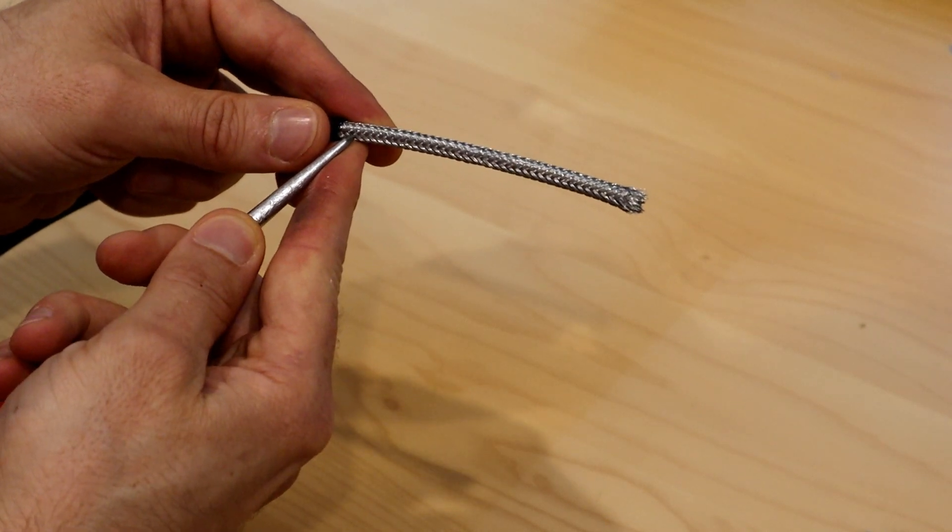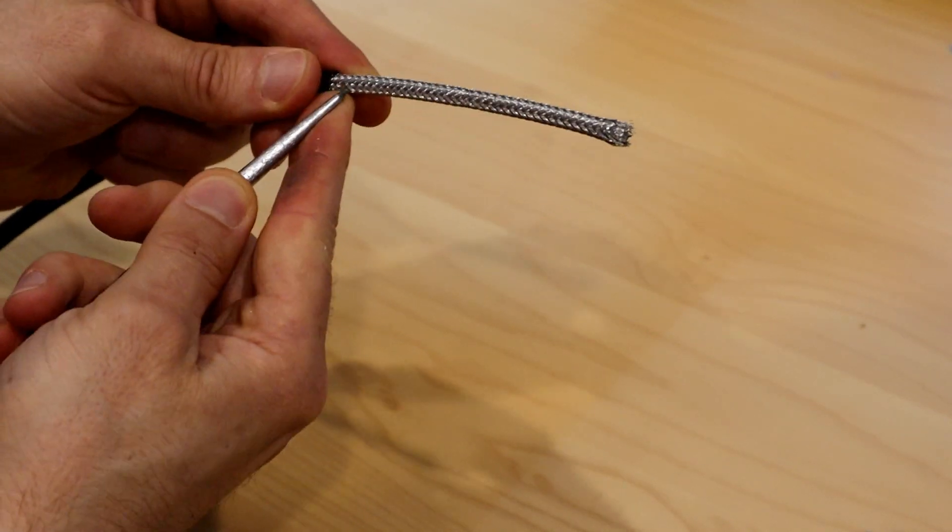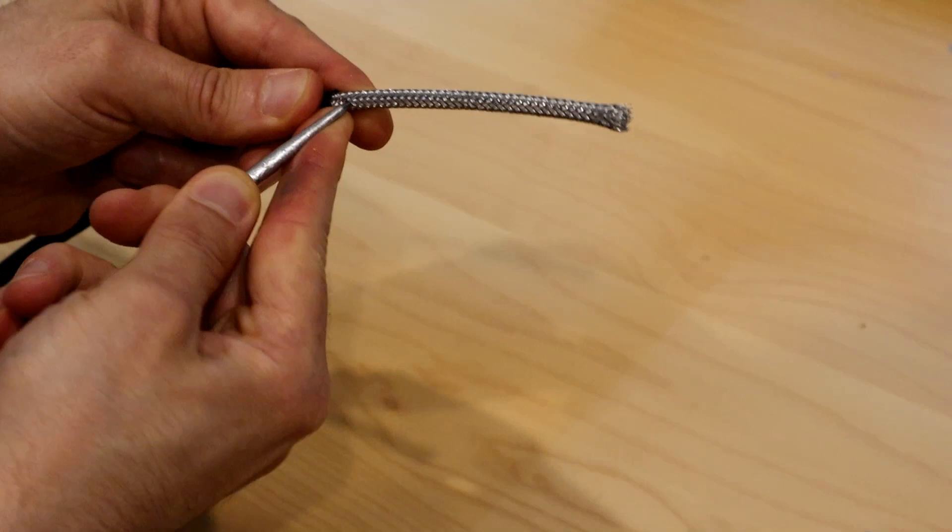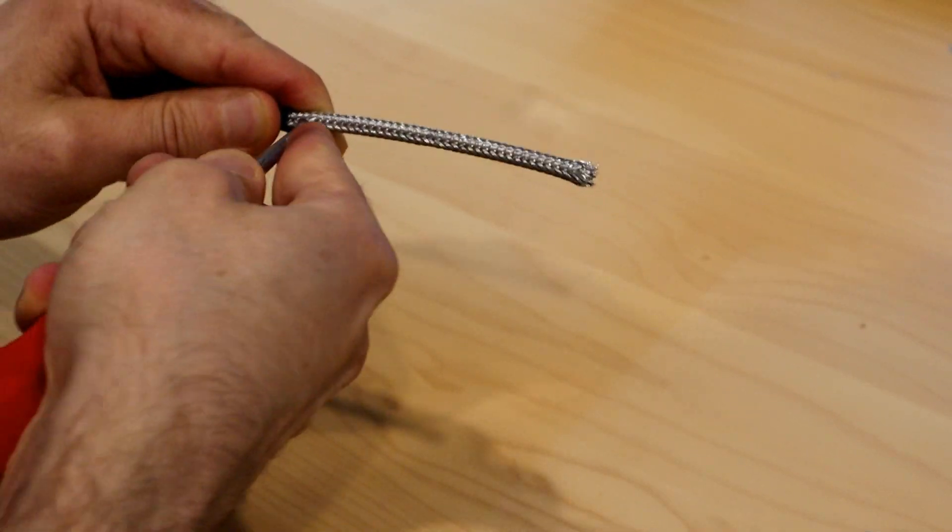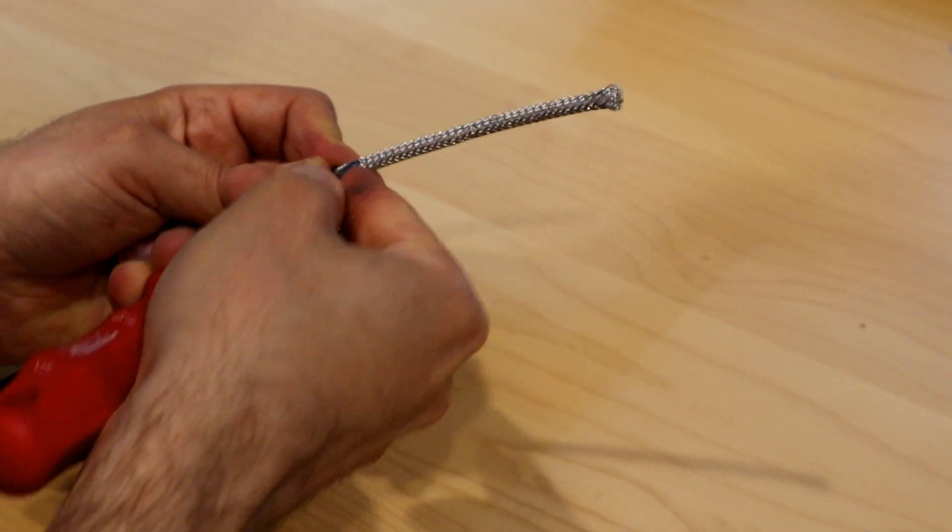Now we take the awl and push the strands a little bit out of the way to create a hole. It is this hole through which we will eventually pull the insulated core of the cable.